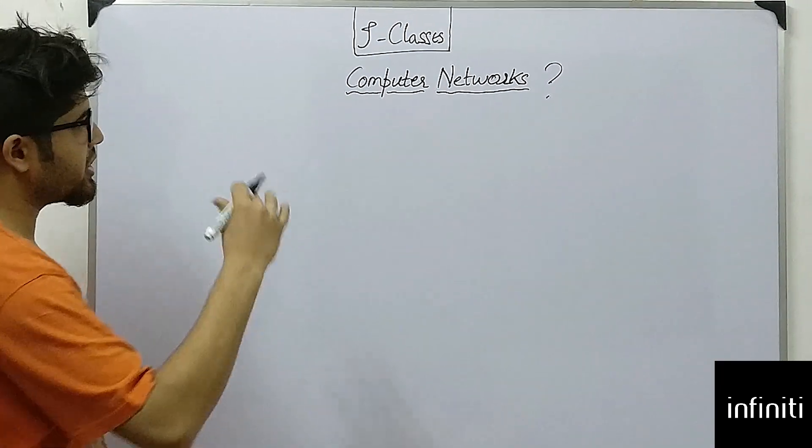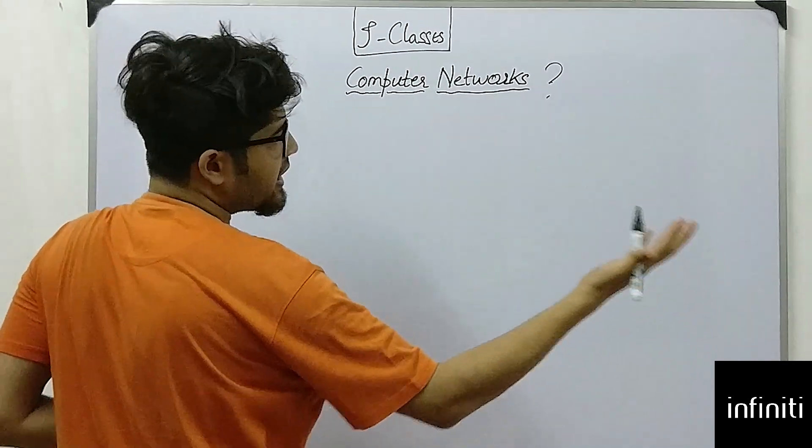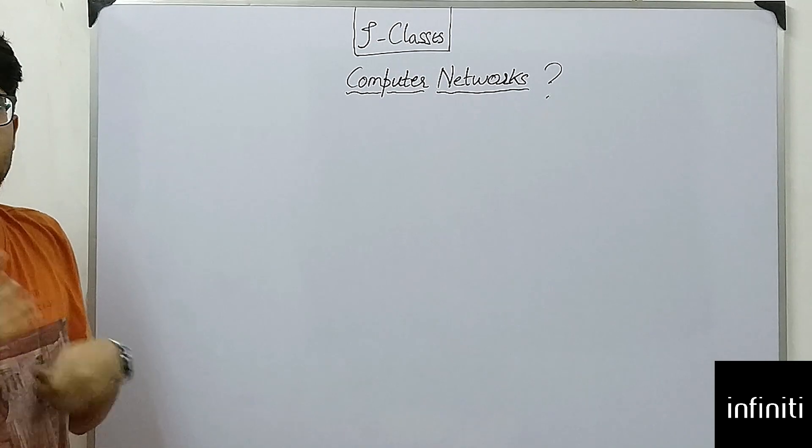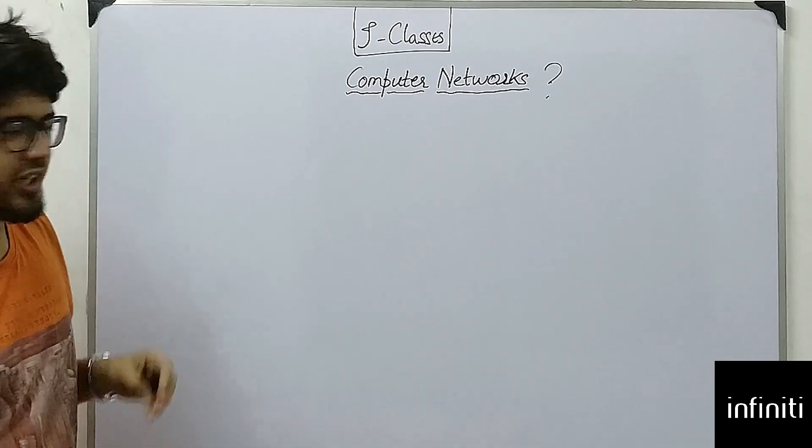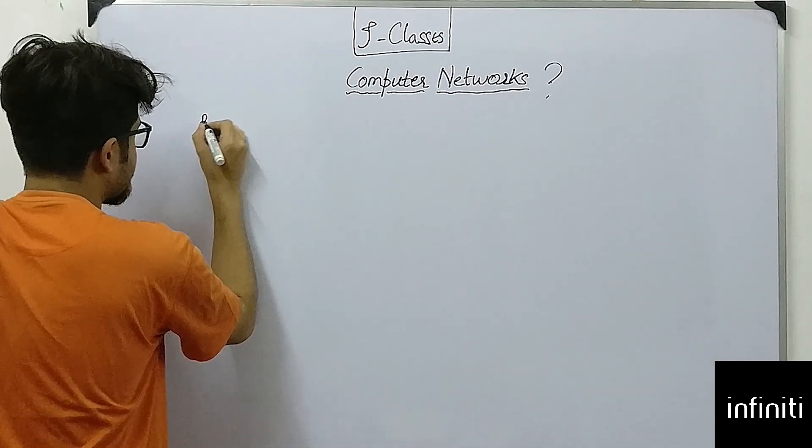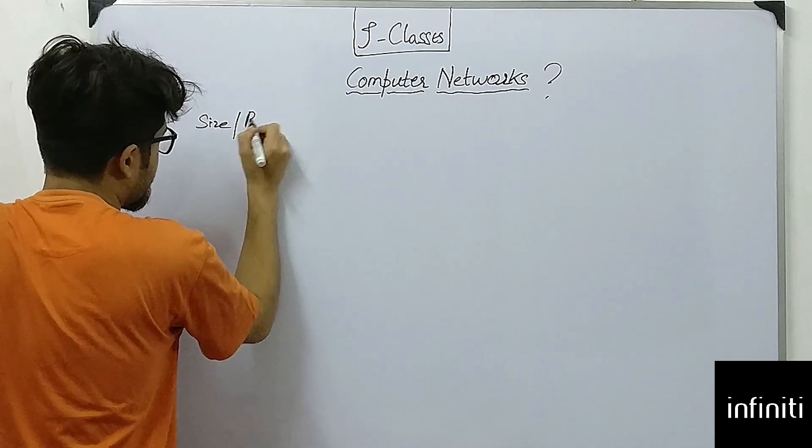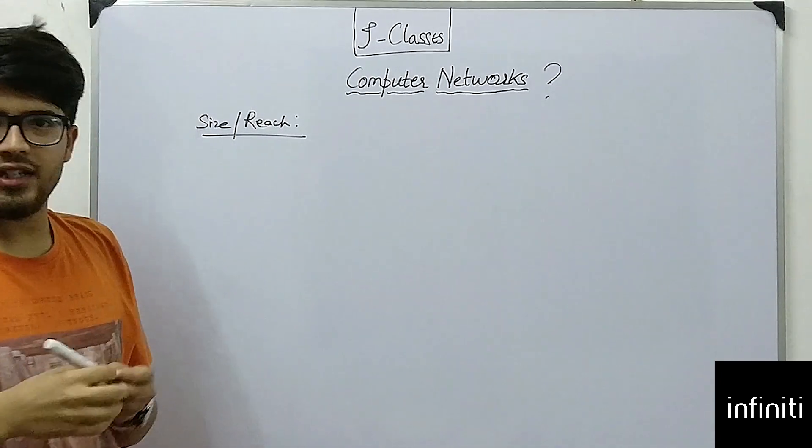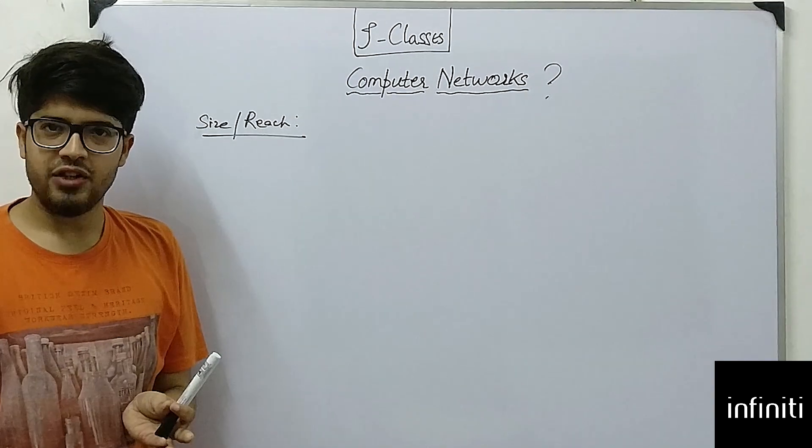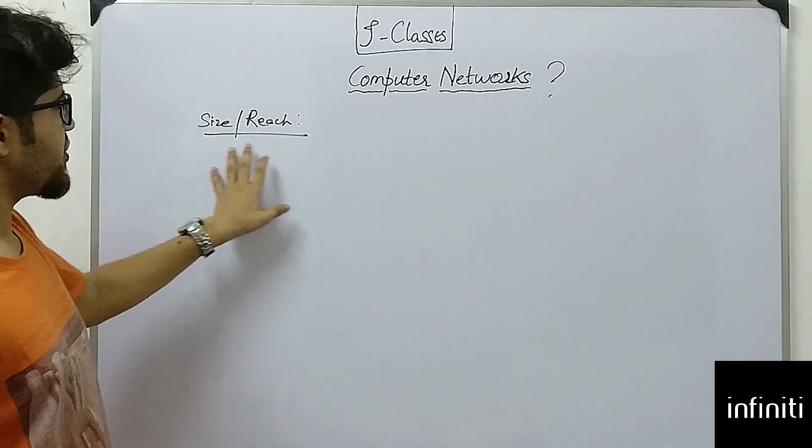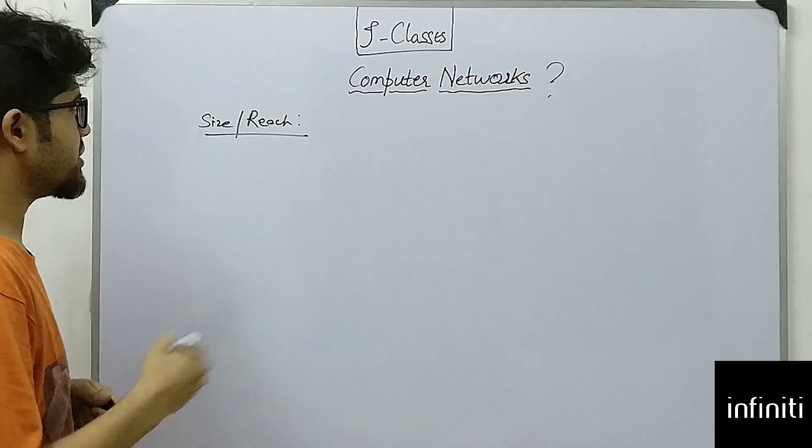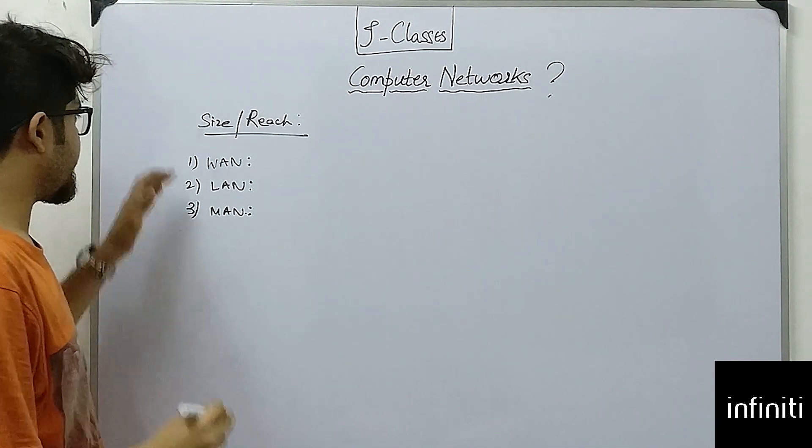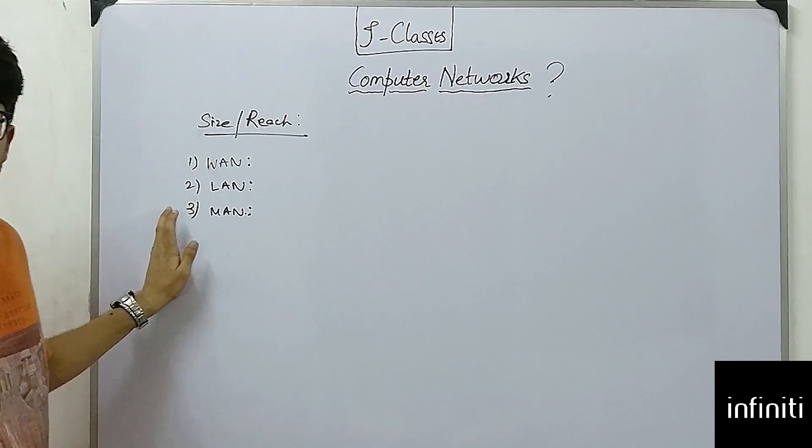Now we are going to study about what are the different types of networks. We can divide networks depending upon their reach—reach means the extent of the network. So size or reach. There are different kinds of ways through which we can differentiate networks, but the easiest way is through size or reach. So that has three types. These are the three different types of network depending upon their size or reach.